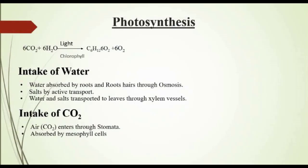Next topic is photosynthesis, page number 120. Photosynthesis is the synthesis of glucose from carbon dioxide and water in the presence of sunlight and chlorophyll, with oxygen as a byproduct. Byproduct means it is not required by plants. Photosynthesis is an anabolic process and is an important component of bioenergetics in living organisms. Nearly all life depends on it. It comprises many coordinated biochemical reactions that occur in plants, algae and some bacteria. Water and CO2 are the raw materials of photosynthesis.